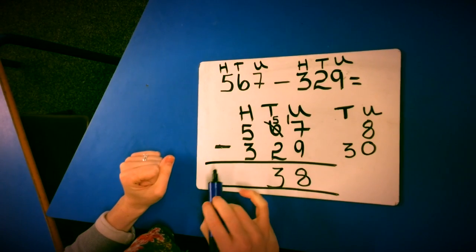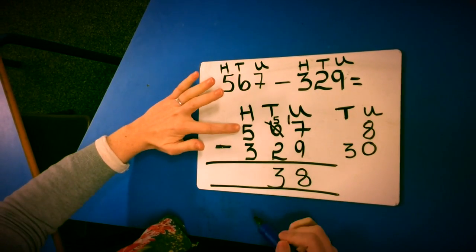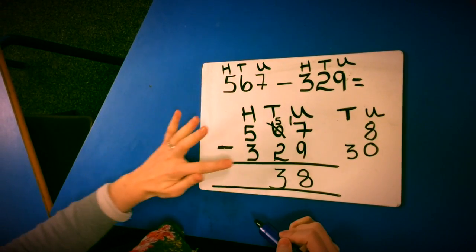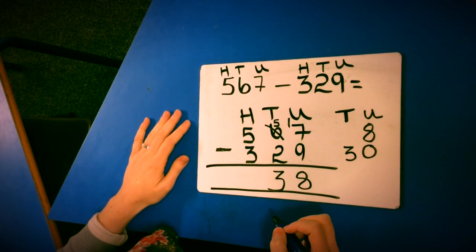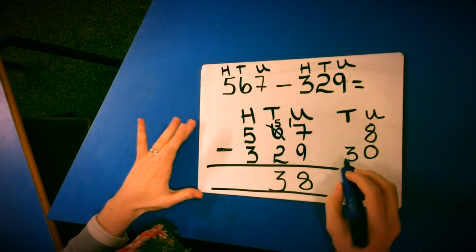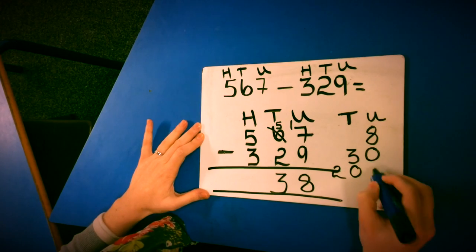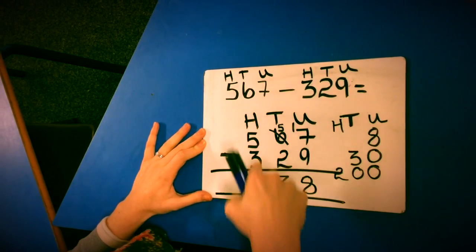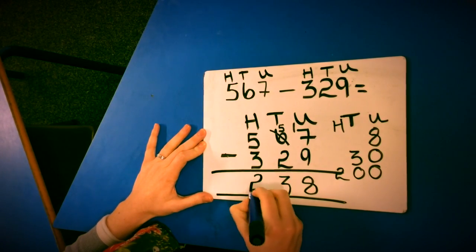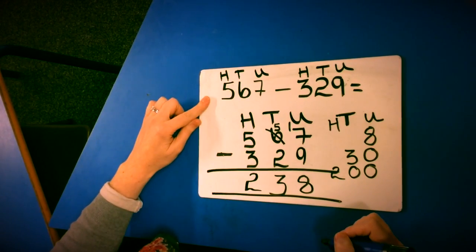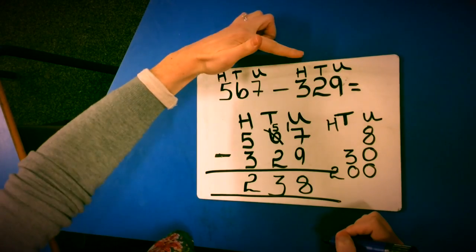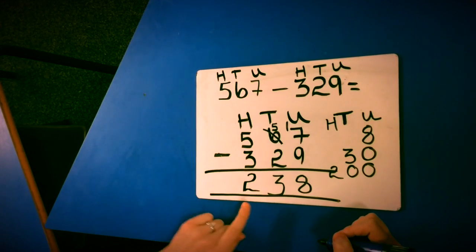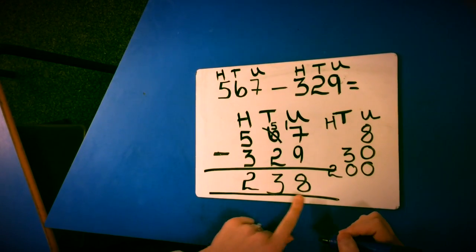And now finally I can do my hundreds column. So I've got 500 take away 300. 500 take away 300 is 200. So I can put my two hundreds into the hundreds column. So 567 take away 329 equals 238.